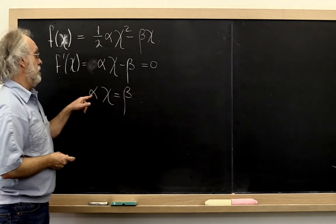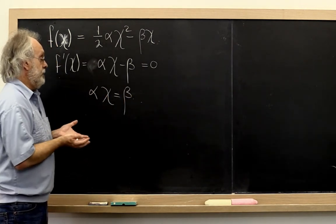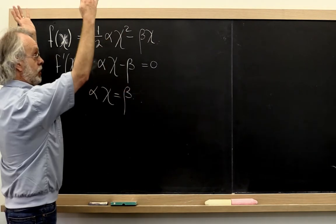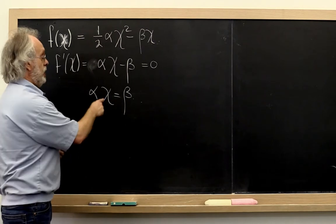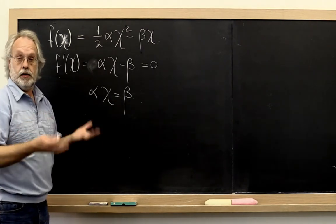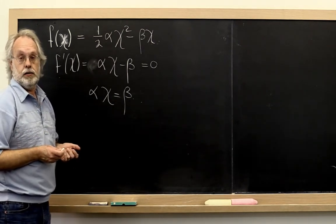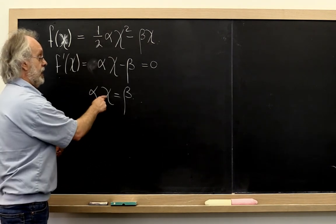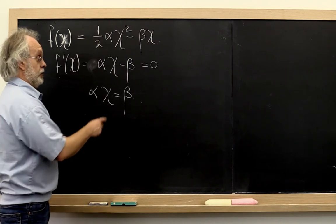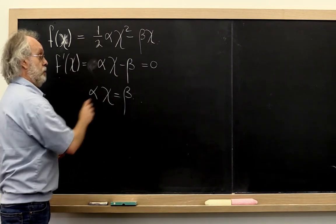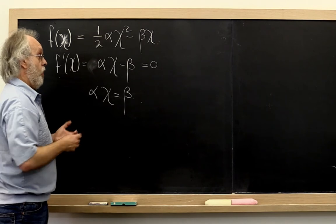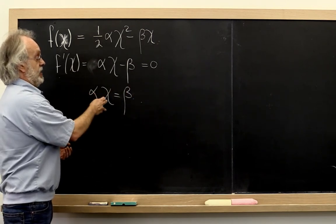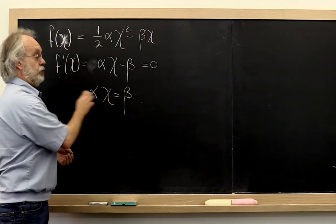And then we remember that if alpha is positive, then this second-degree polynomial is concave upwards, and therefore we know that we're at a minimum there. And finally, if we consider alpha to be a 1 by 1 matrix, chi to be a vector of size 1, and beta to be a vector of size 1, then we recognize this as solving A times x equals B for the vector x.